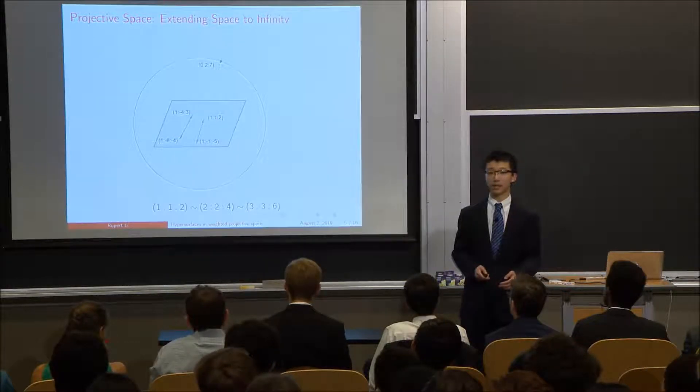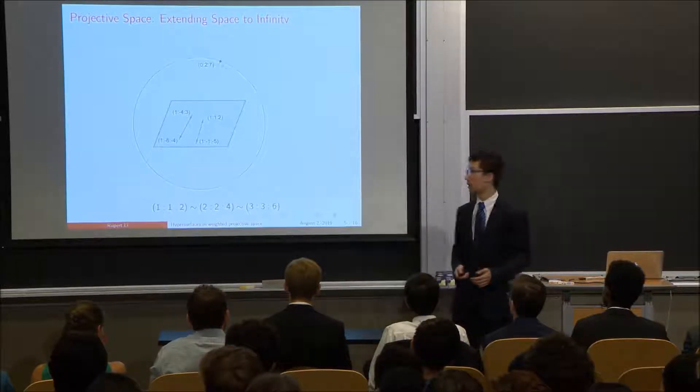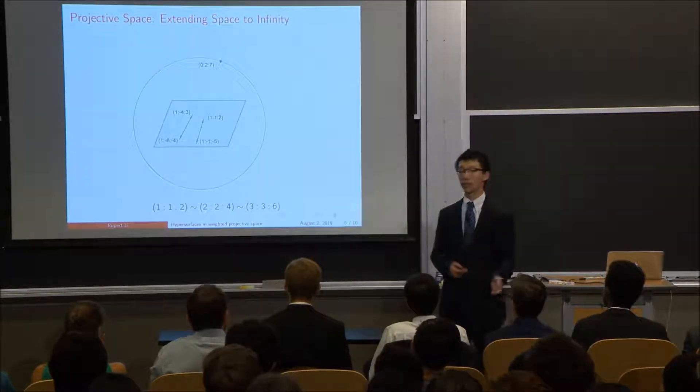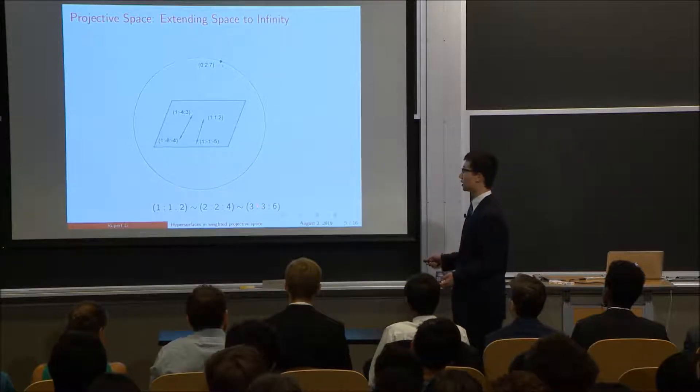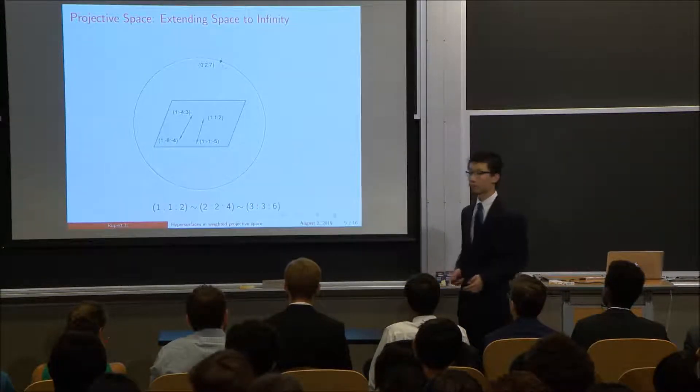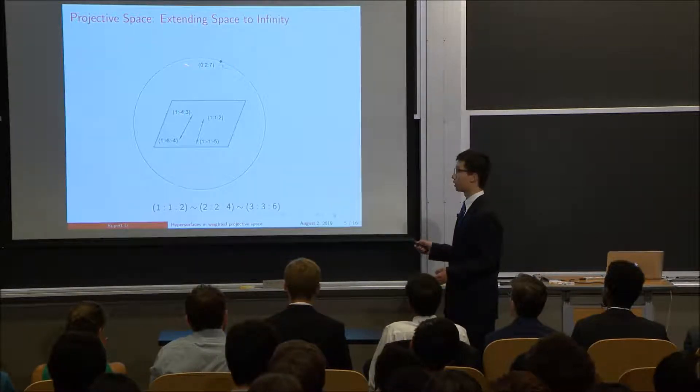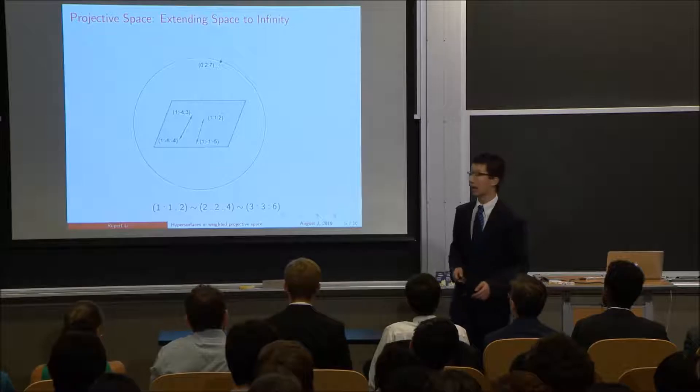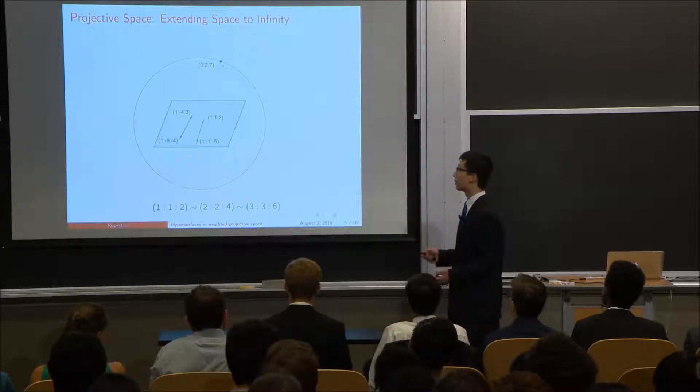One thing to notice about them is that they use colons, not commas. And the reason for that is because all we care about are the ratios of the numbers, not the numbers themselves. So the point is the same thing as the point. And that means we can always make the first coordinate either a one or a zero by scaling. If it is a one, then those last two coordinates will just define the point on the plane like normal. And if it's a zero, then we're at the circle at infinity. And those last two coordinates dictate the direction.